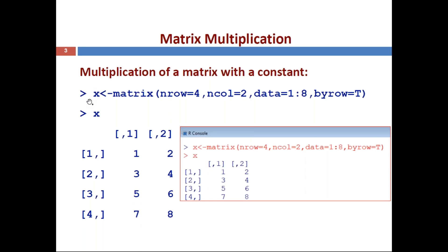Before proceeding to matrix multiplication, let's recall the creation of a matrix. Here I am creating a matrix x using the syntax: matrix(nrow=4, ncol=2, data=1:8, byrow=TRUE). That means it takes values from 1 to 8, filling them row-wise. The output is a 4×2 matrix where the first row contains 1 and 2, second row 3 and 4, third row 5 and 6, and fourth row 7 and 8.